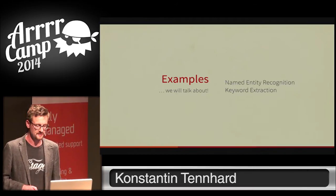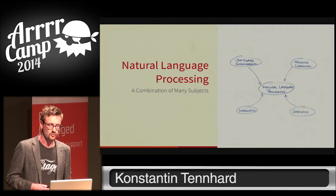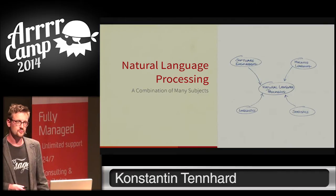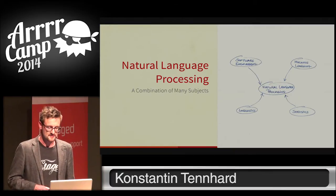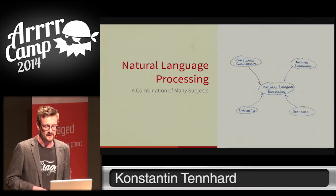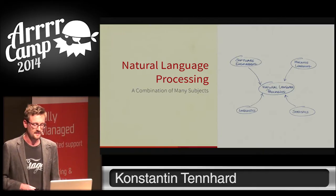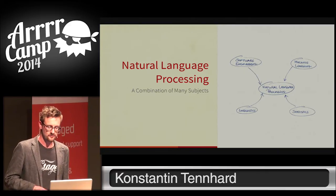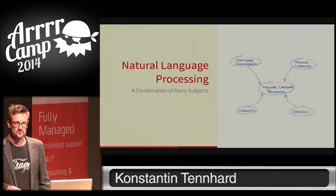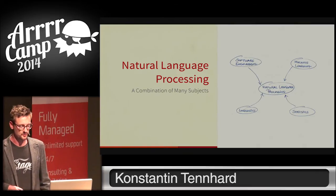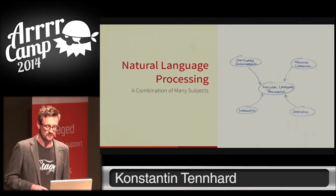Before we dive into these examples, I want to quickly talk about what natural language processing actually is from a computer science perspective. Natural language processing is a combination of many things: software engineering, machine learning and statistics, and linguistics. When you take university classes on NLP, you usually focus mostly on linguistics and machine learning. As most of you are probably application developers, I want to focus on how you can use NLP in your own applications — specifically the software engineering aspect.